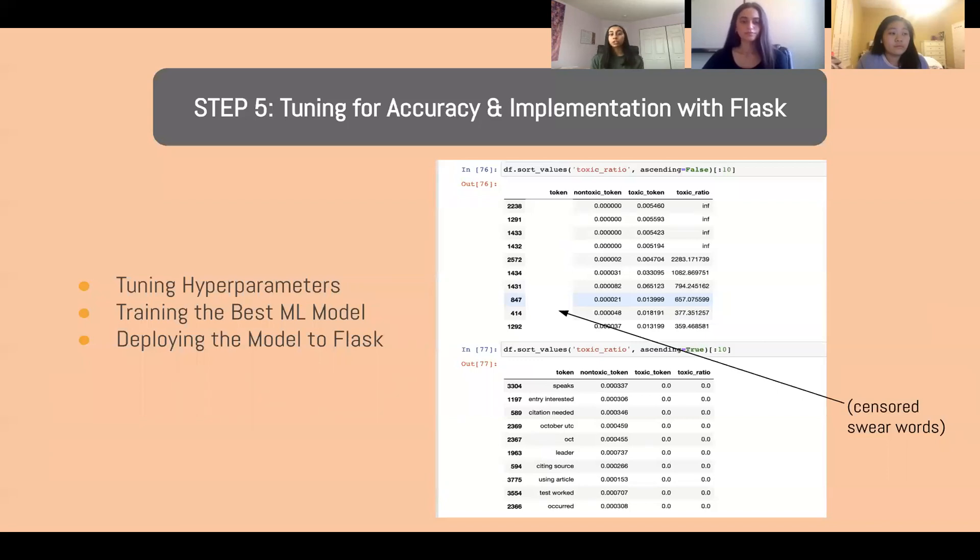So after we figured out the best ML model, we had to tune it for accuracy. So what we did in this case was we had to tune the hyperparameters or in other words, the characteristics of our machine learning model. So what we did for this, for this step, we sorted values that were found, we sorted words that would be found in more toxic comments or non-toxic comments. So as you can see in the image, the words that have been censored out due to toxicity have were found to have the highest frequency in those toxic comments and vice versa for non-toxic comments. So words like speaks, entry, interested, and et cetera, they were found in comments that weren't really considered that toxic, which makes sense.